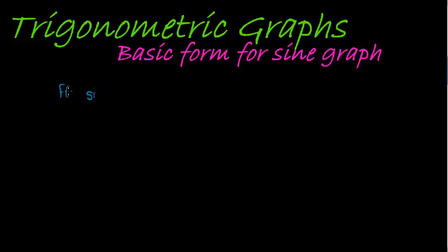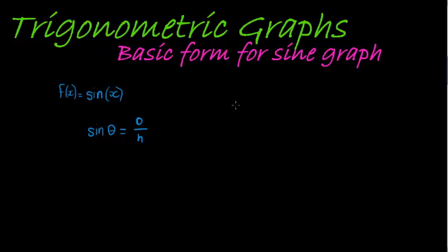If I have a function and I substitute x into sine, x becomes the input for the sine function. We should remember that sine of an angle theta is the opposite length of the right-angled triangle divided by the hypotenuse. One simple way of understanding this is to consider a ladder against the wall.